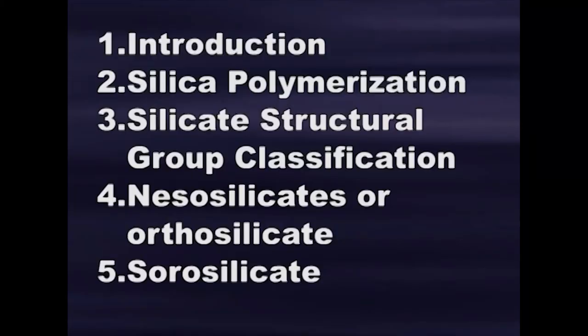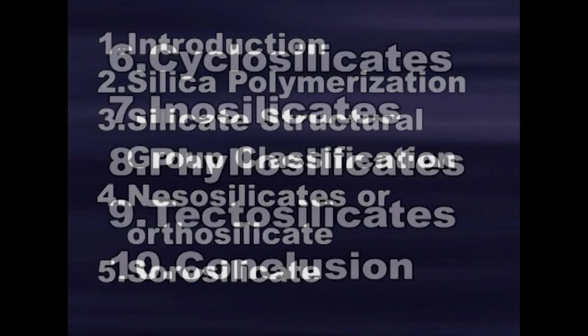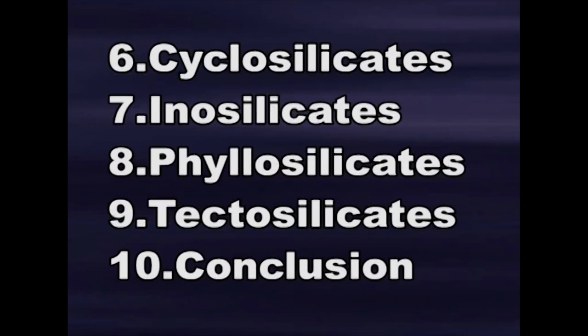Today I will discuss the structure and classification of silicates. The topics include: first, introduction; second, silica polymerization; third, silicate structure group classification; fourth, nesosilicates or orthosilicates; fifth, sorosilicates; sixth, cyclosilicates; seventh, inosilicates, including chain silicates; eighth, phyllosilicates or layer silicates; ninth, tectosilicates, also known as framework silicate SiO2; and tenth, conclusion.